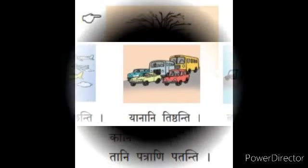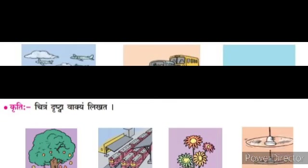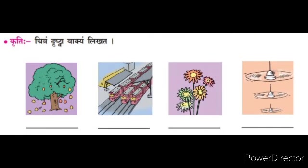Now make sentences for the next three pictures properly in this way and frame the questions also. For the activity — Chitram drishtva vakyam likhata — see the picture and write the sentence. First picture, fruits are falling: palani patanti. Second, trains are running: relayanani dhavanti. Third, flowers are blooming: pushpaani vikasanti. And the last, fans are rotating: vyachanani chalanti.